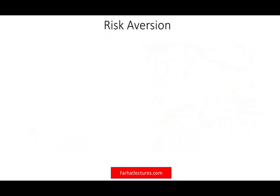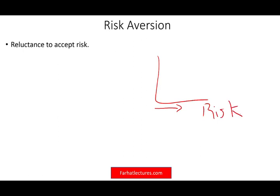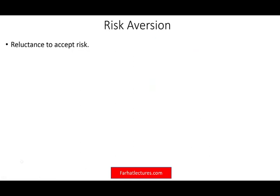From the risk premium, we're going to talk about risk aversion. What is risk aversion? Risk aversion is the reluctance to accept risk. As individuals, we are risk averse — we try to avoid risk as much as possible. If we want to take risk, if we want to take more risk, what do we expect? We expect to earn a higher return. So yes, if we're going to take risk, we're going to expect a higher return. Generally speaking, we can say we are risk reluctant — we reluctantly accept risk.